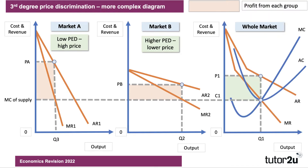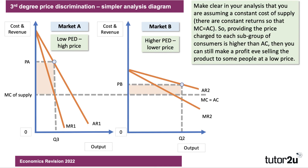Let's go back a slide. You get rid of the third diagram and just use the other diagram. You can actually draw two if you want. So a super simple diagram is to draw market A, market B, with the same marginal cost of supply. Make clear in your analysis paragraph — tell the examiner — that you are assuming a constant cost of supply. Marginal cost equals average cost. That's quite important to make clear in the answer so that it becomes marginal and average cost — constant returns to scale. So providing the price charged to each subgroup is higher than the cost, you can still make a profit even if you're selling the product to some people at a low price, as in market B.